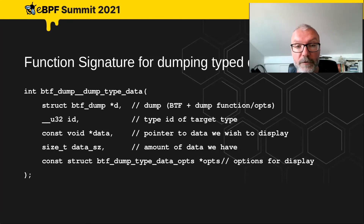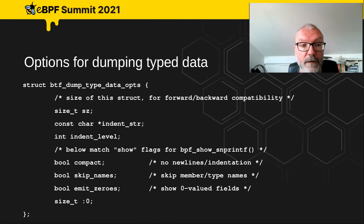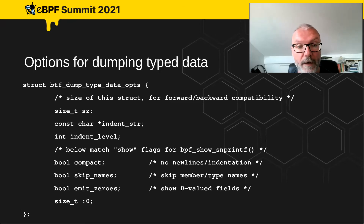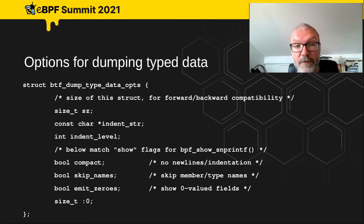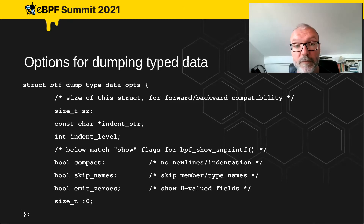There's also a bunch of options, including the indent string — by default it's a tab, but you can use a space or a number of spaces — and the indent level to start display at. There's a compact mode which effectively just removes newlines and extra whitespace. You can also skip the names of type members if you want a very compact output, which can be useful for small types, though for big types it gets a bit hard to track what's where.